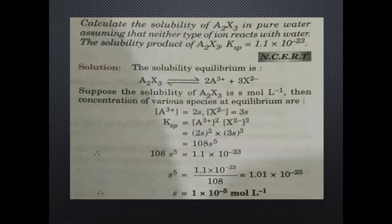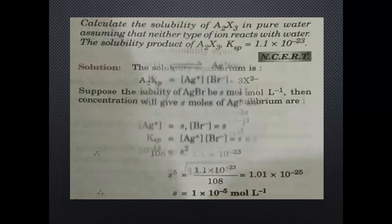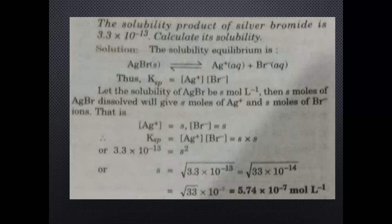In this chapter, questions often give the value of Ksp in a way that makes calculation easy — like powers of 1/4 or 1/5. One more question: The solubility product of silver bromide is given. Calculate its solubility. Same reaction, same method. Silver bromide is AB type — simple.